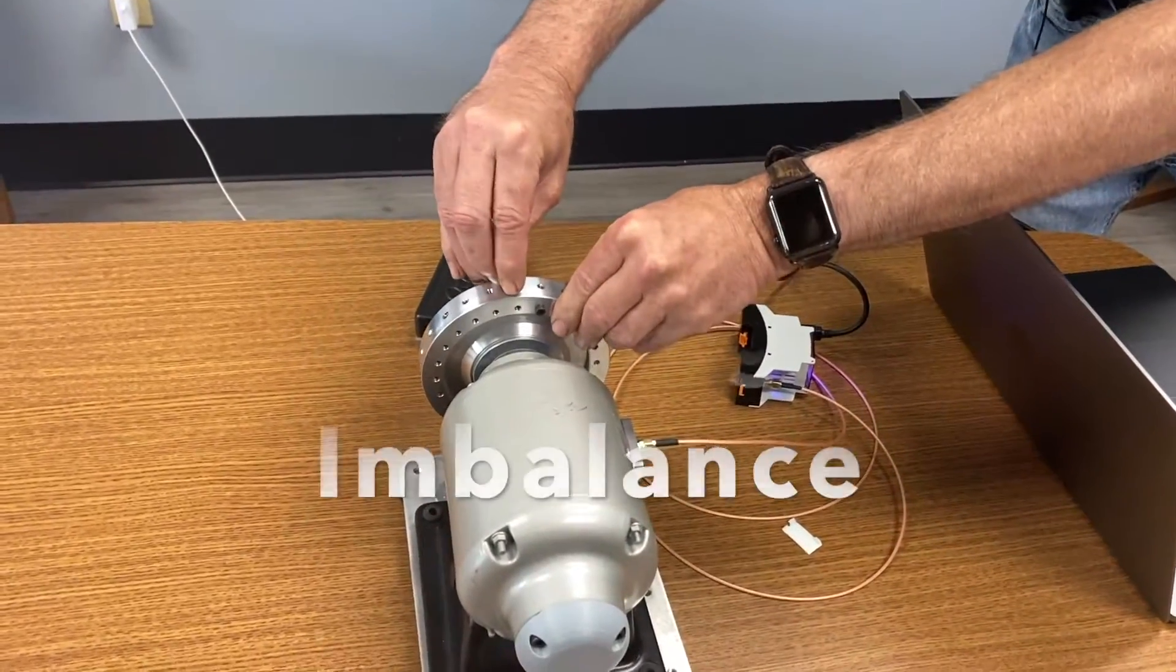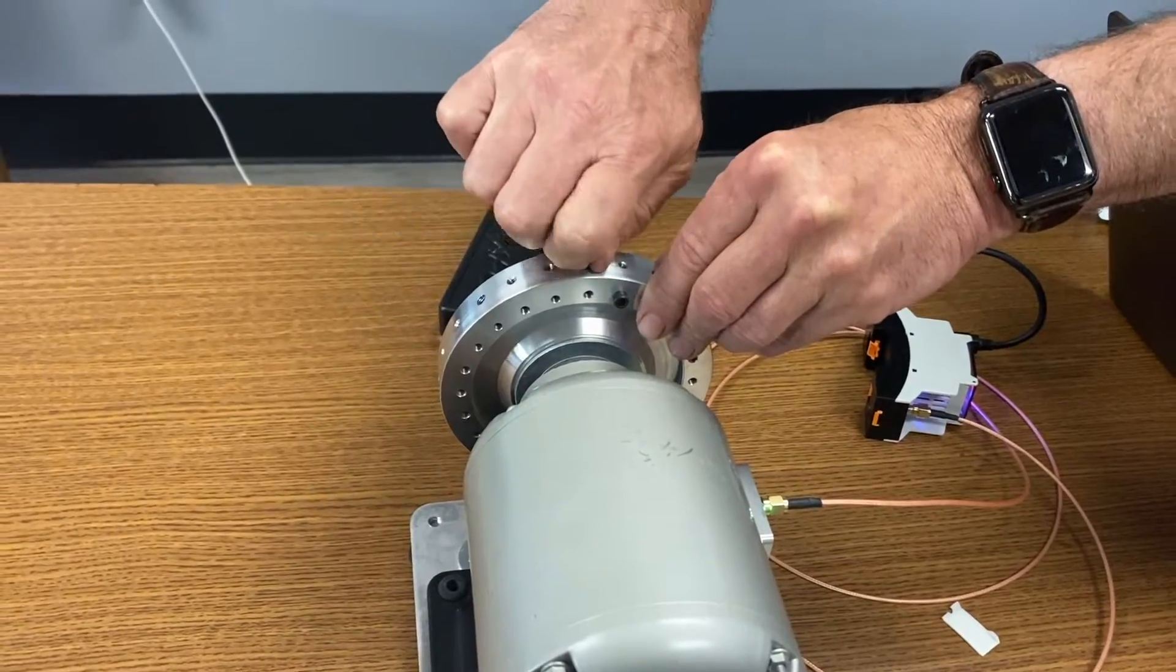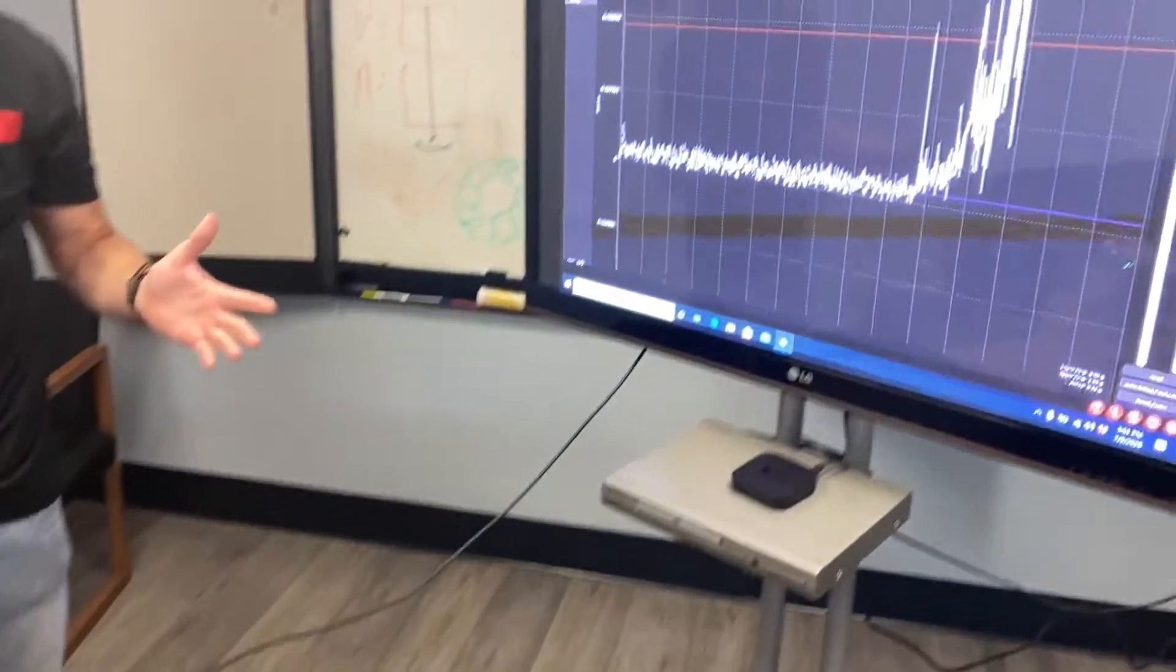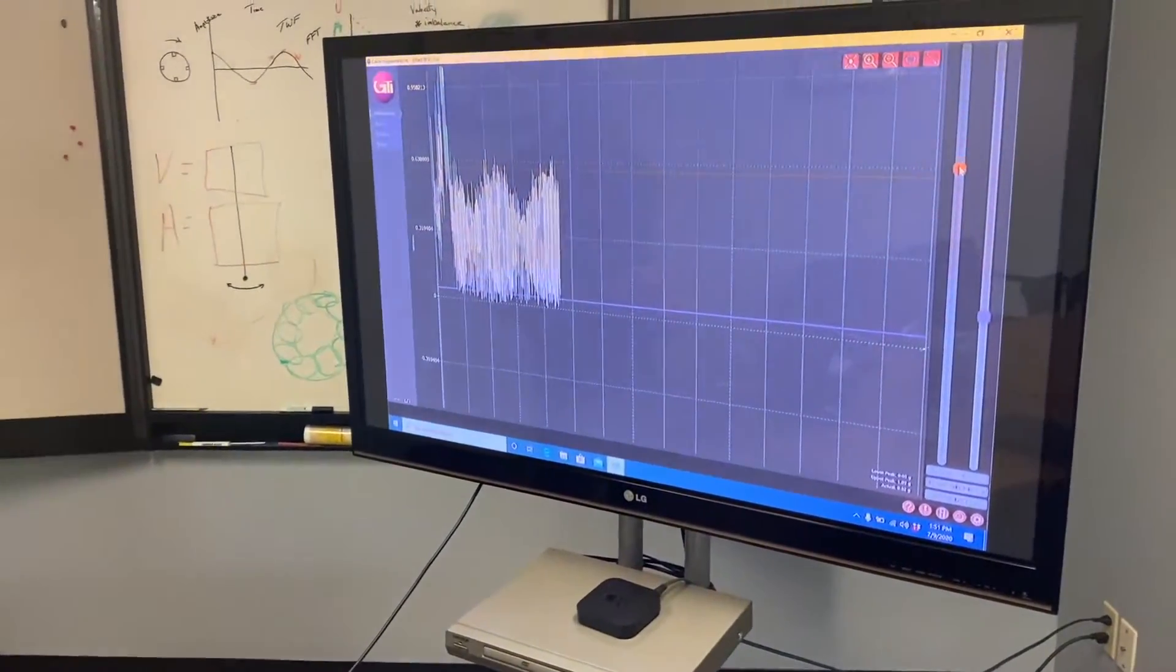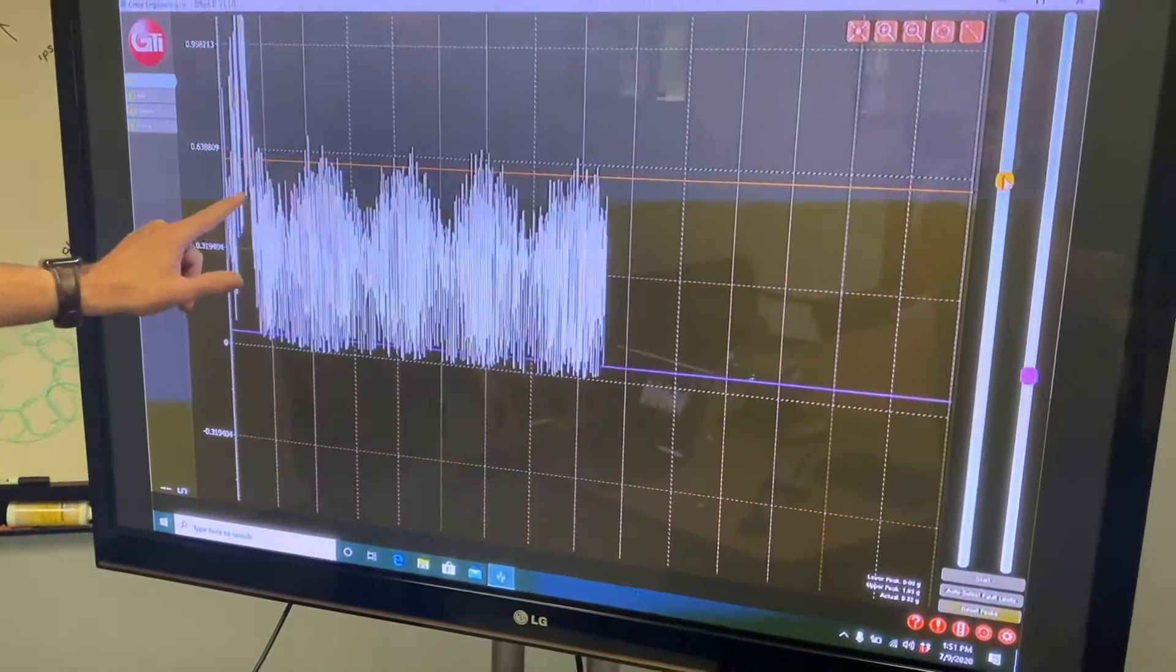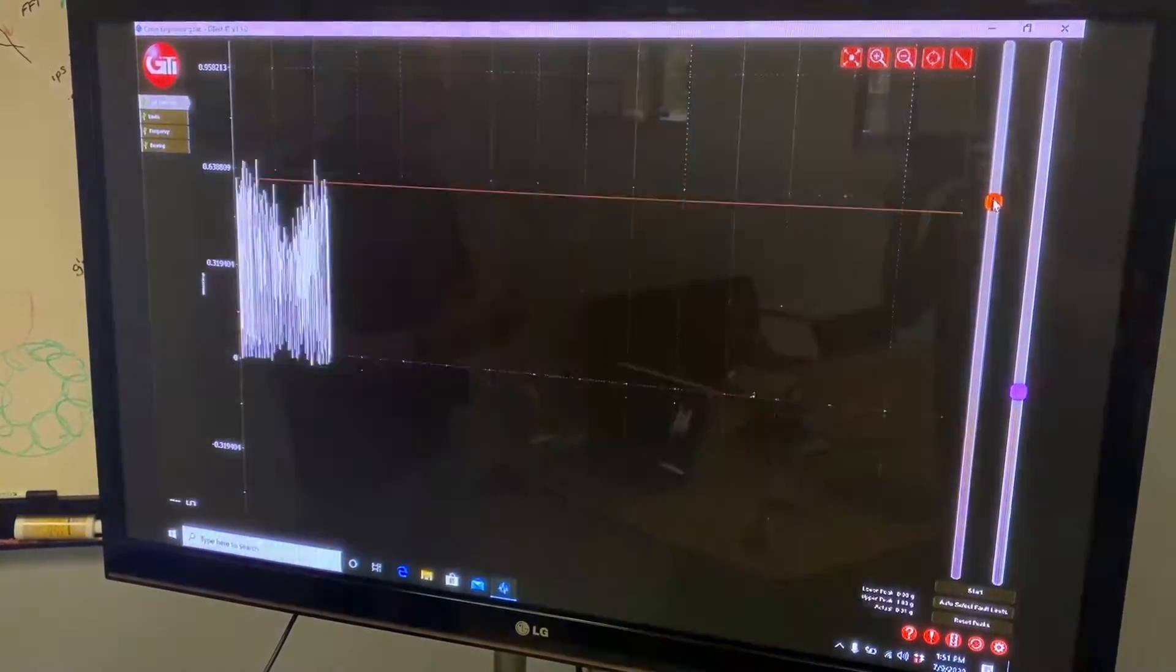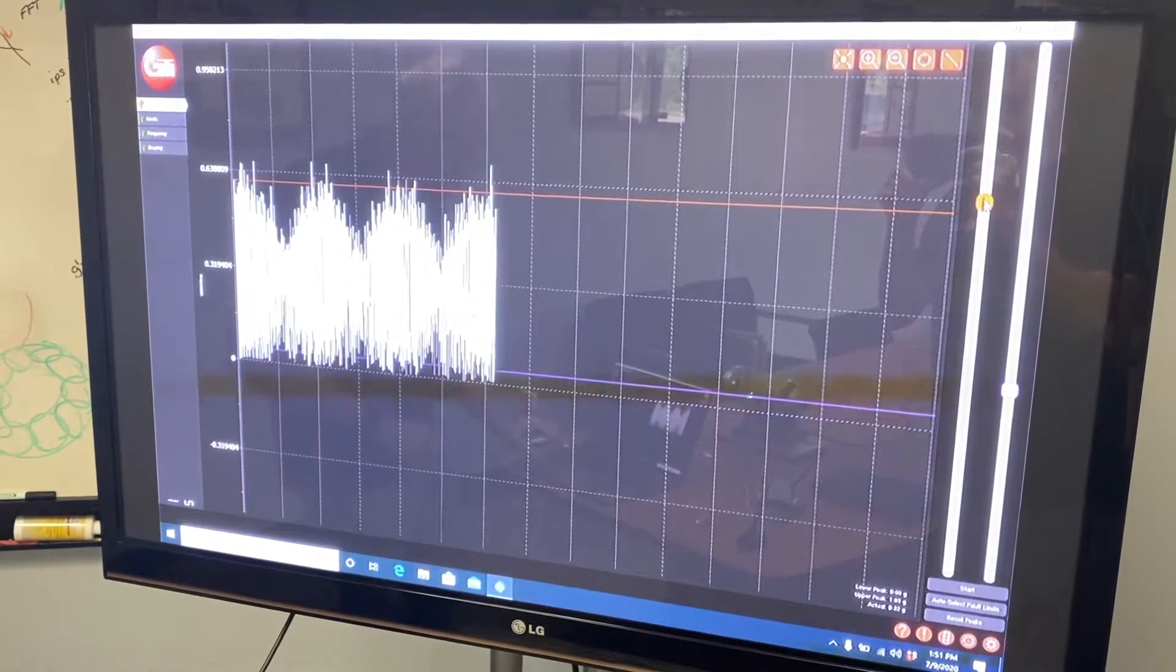I'm just going to put a small screw right here and you can see this isn't much weight that we're putting in there. Now this is going to simulate us possibly putting an unbalanced tool in and it's only slightly unbalanced as you can see but we've crossed our threshold.